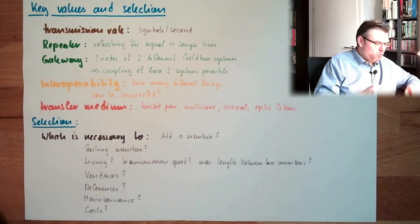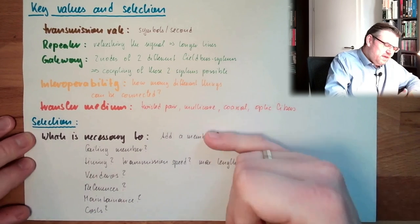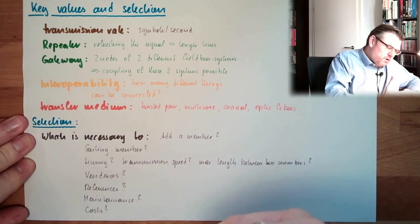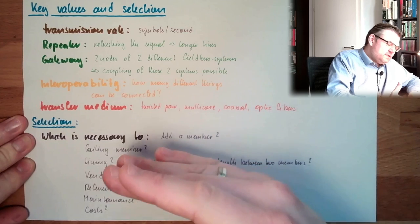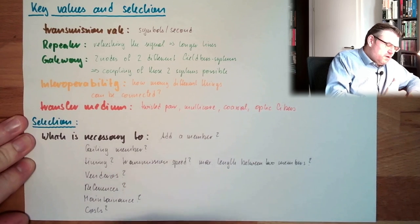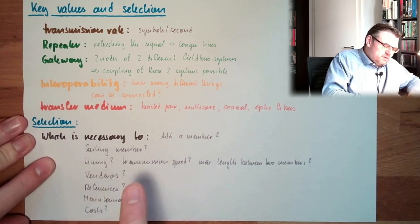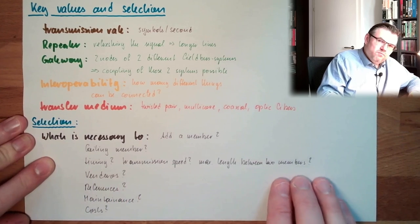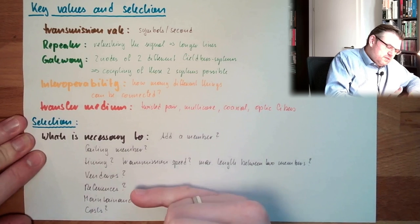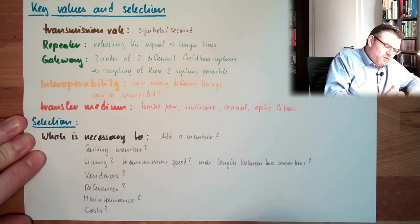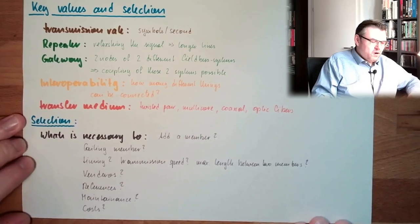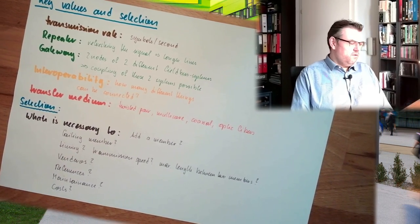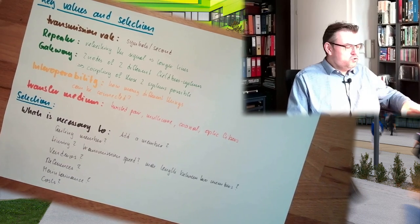What does one node cost? These are the questions you have to ask yourself. What is necessary to add a member? What is necessary to deal with failing members? What is necessary for timing? What is necessary for transmission speed? What necessary maximum length between two members do I have? Other choice of vendors, other references for this type of application. What is necessary to maintain the thing? And what is necessary to pay for the thing? And then usually there is not much left.